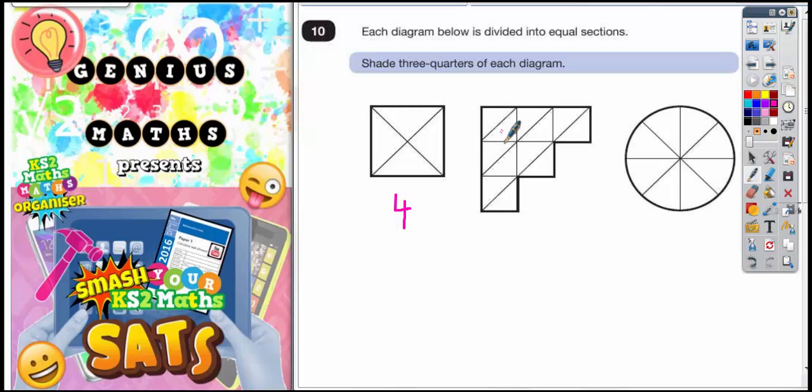In the second diagram there's 1, 2, 3, 4, 5, 6, 7, 8, 9, 10, 11, 12. So that's 12 sections.